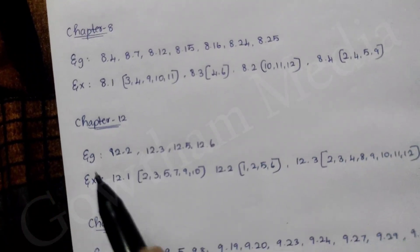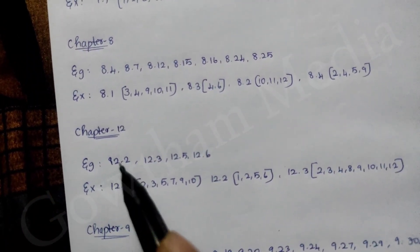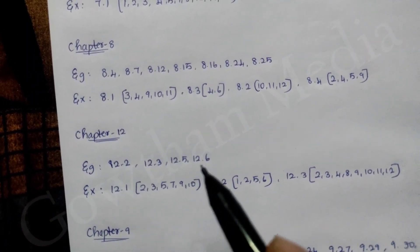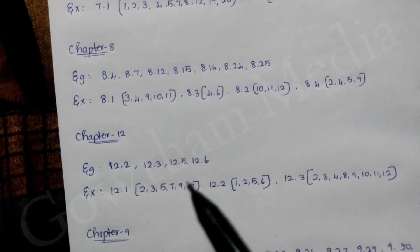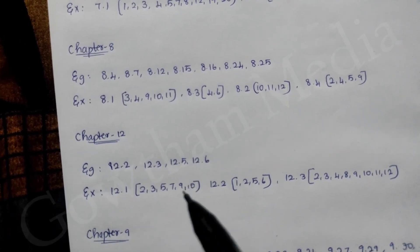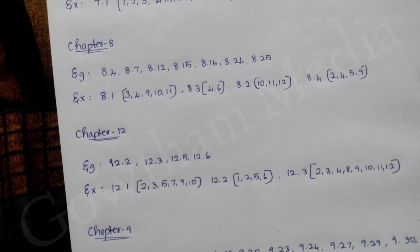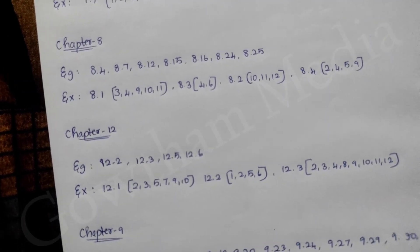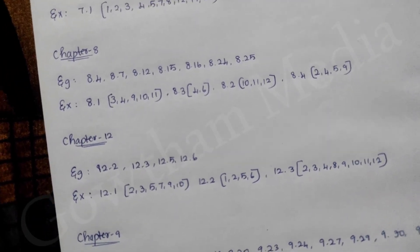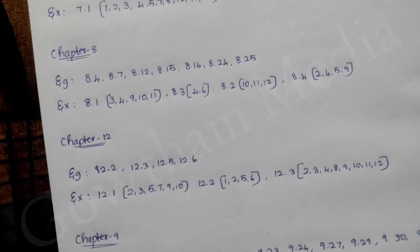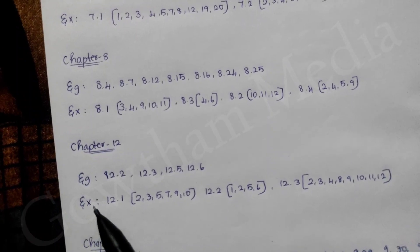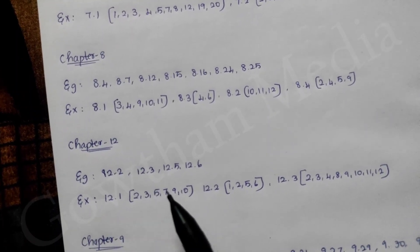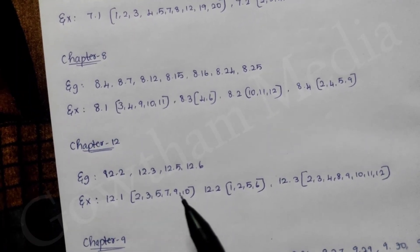Chapter 12. Example sums: 12.2, 12.3, 12.5, 12.6. Exercise XA is 12.1 — 2nd, 3rd, 5th, 7th, 9th, 10th.